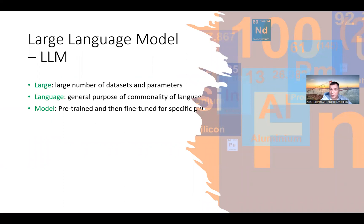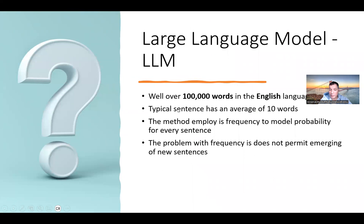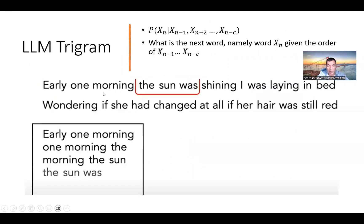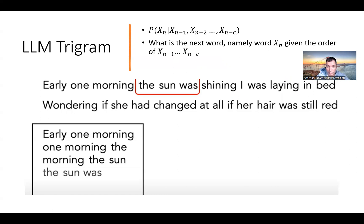The large language model works with a large number of dataset parameters. In English we have about 100,000 words and the typical sentence averages 10 words. There is a method to create content based on key parameters about the English language. There is a probability function where, from the previous words, there is a probability to predict the next word. For example, if it's six in the morning and you write 'good,' most likely the next word will be 'morning,' 'day,' or 'sleep.' For every word, there is a probability, and that's what machines create.